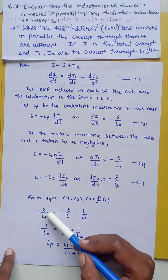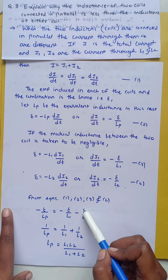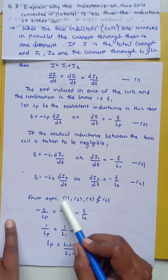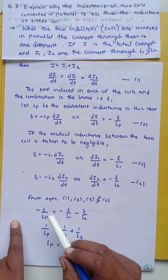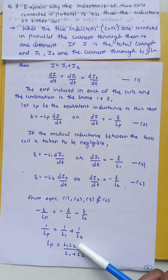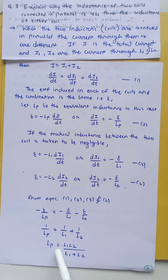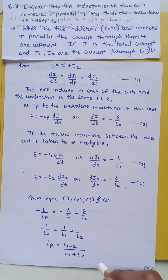Substituting equations 2, 3, and 4 into equation 1, we get: minus epsilon divided by LP equals minus epsilon divided by L1 minus epsilon divided by L2. The minus signs cancel and epsilon cancels, giving 1/LP equals 1/L1 plus 1/L2. Doing cross multiplication, LP equals L1·L2 divided by (L1 plus L2). From this, LP will be less than the inductance of each individual coil.